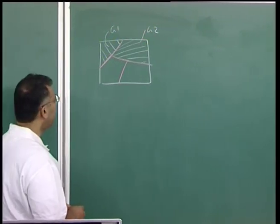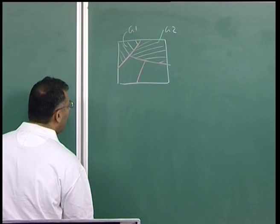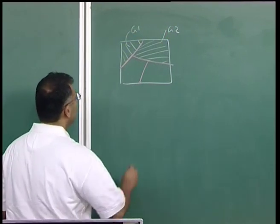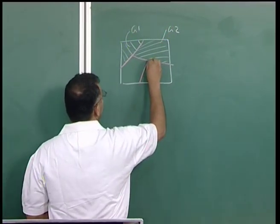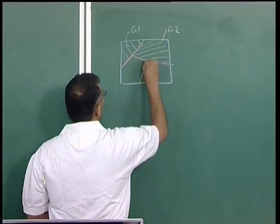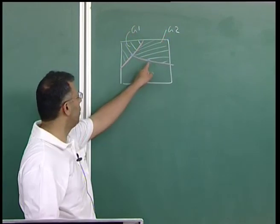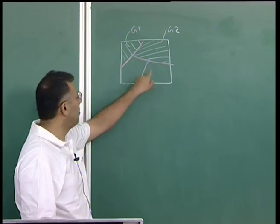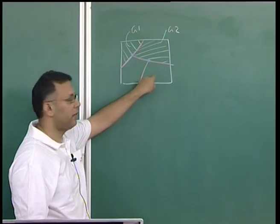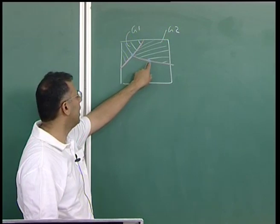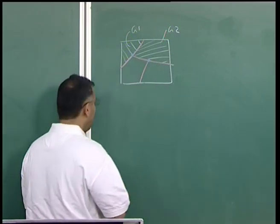Apart from grain boundaries, there are higher order structural entities. In two dimensions this looks like a point, but in the third dimension it is a line — this is a triple line. So you have grain boundaries, and additionally triple lines and higher order entities such as quadruple junctions.